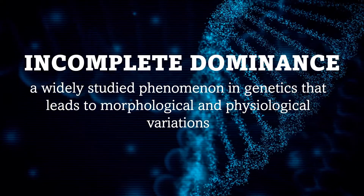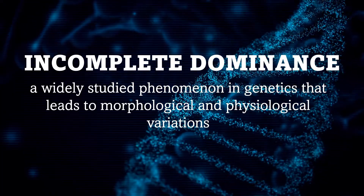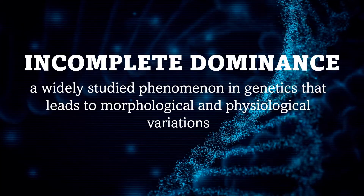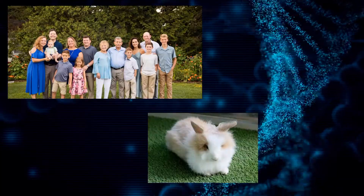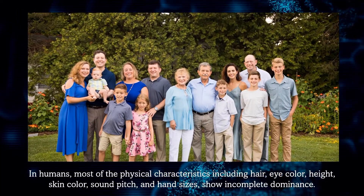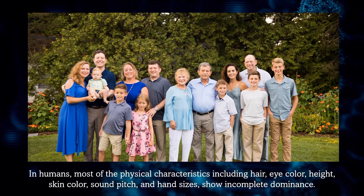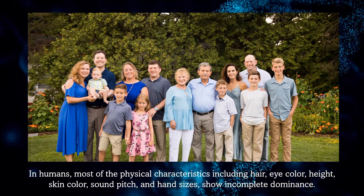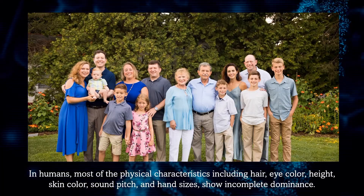The pink flower color trait is an example of incomplete dominance that occurs in nature. However, apart from plants, incomplete dominance also occurs in animals and in humans. In humans, most of the physical characteristics — including hair, eye color, height, skin color, sound pitch, and hand size — show incomplete dominance.